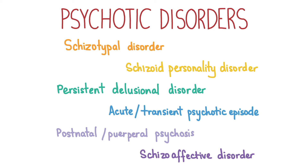Persistent delusional disorder is when the patient has one or more delusions for three months or more but the other symptoms of schizophrenia are not present. An acute or transient psychotic episode is where symptoms of schizophrenia have been present for less than a month and therefore cannot yet be classified as schizophrenia. Postnatal psychosis is a severe form of postnatal depression affecting around one in a thousand women within the first few weeks after giving birth, presenting with psychosis and mood changes like low mood.